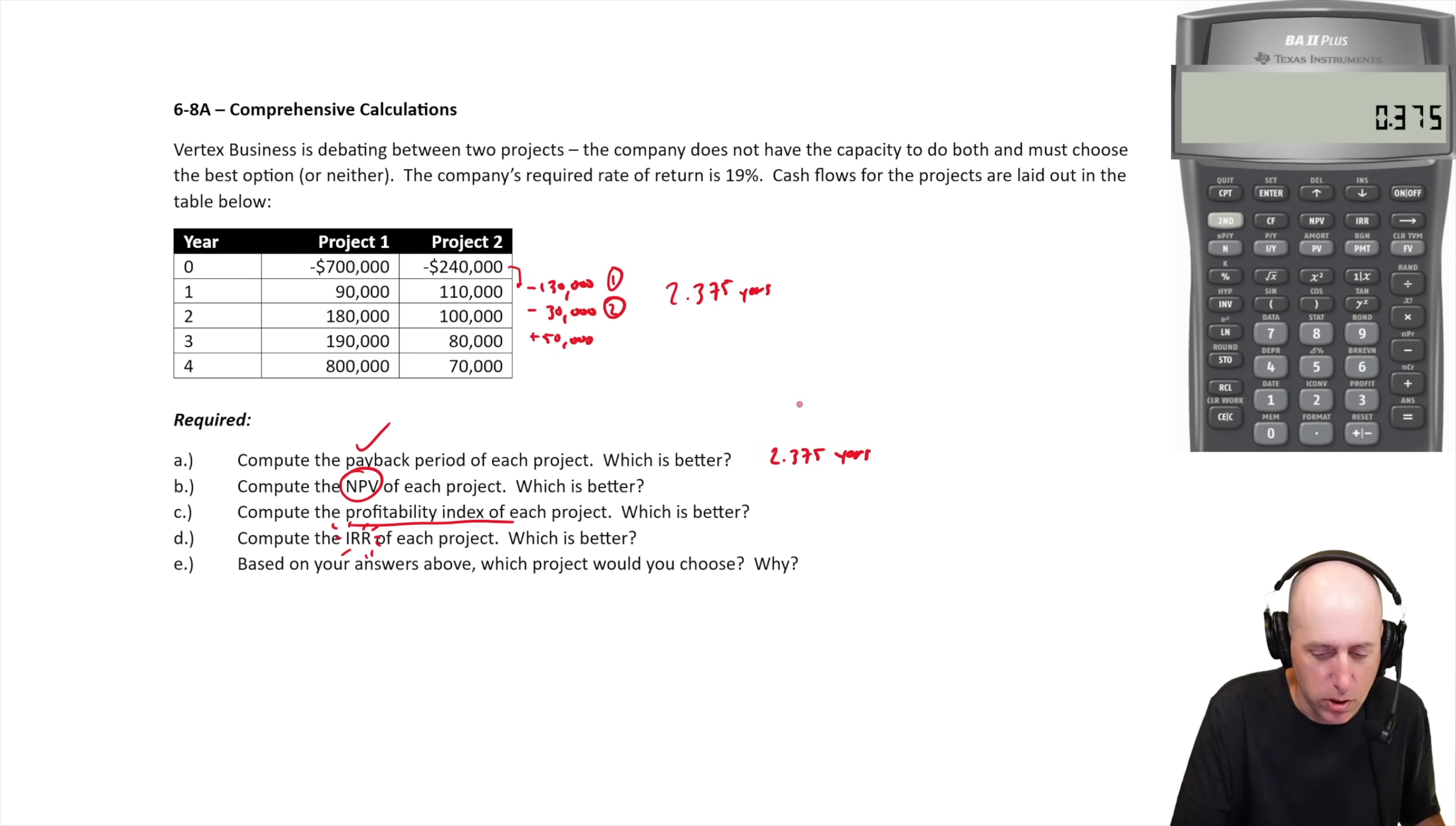And this is project two. Let's do project one, I'll do it in blue ink. So again, we're 700,000 down, we make 90. So we're 610 down, we make 180. So we are 430 down, we make 190. So we are 240 down. And then we make 800. So we are like 560 up. And that's where we go positive.